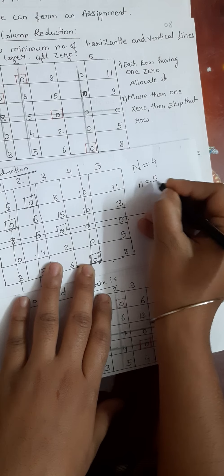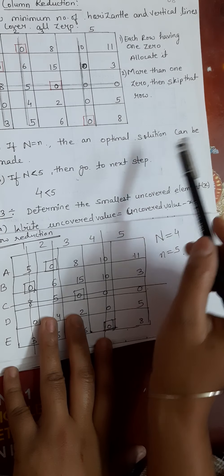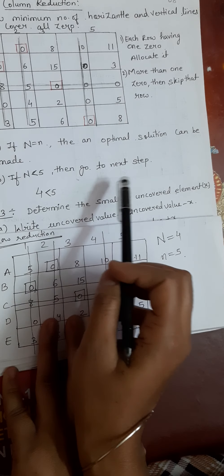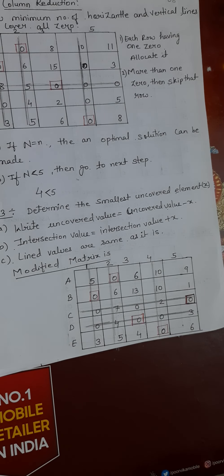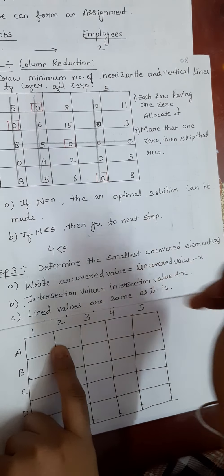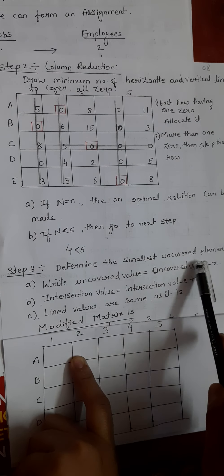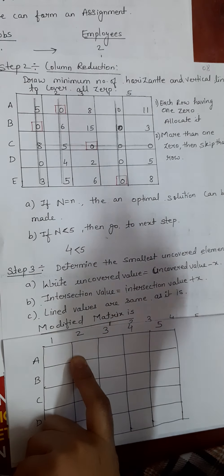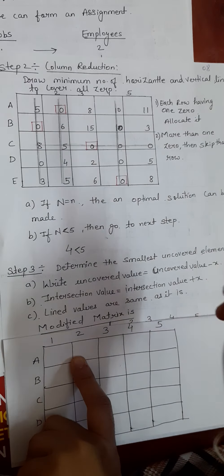The order of the matrix is 5. Since the number of lines (4) is less than the order of the matrix (5), we cannot form an optimal solution yet and proceed to the next step. We determine the smallest uncovered element. The uncovered elements are 8, 15, 2, 6, 11, 3, 5, and 8. The smallest uncovered element is 2.